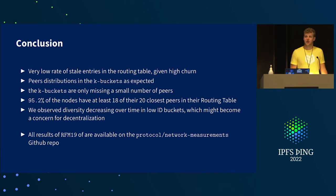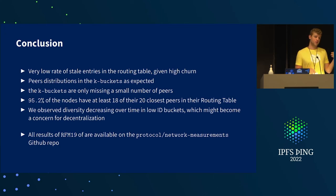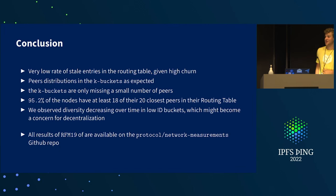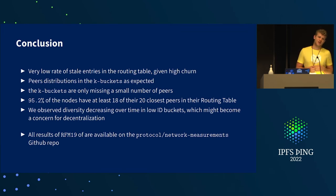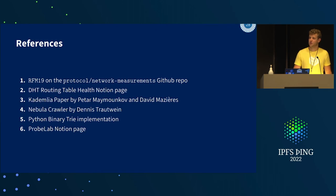To conclude: the DHT is doing very well overall. K-buckets are missing only a few peers, we don't have many stale entries, peer distribution is as expected, and most nodes know their 20 closest peers. We do observe diversity decreasing over time, but it's not an emergency — it's something we can correct. It's not critical now, but it is a path for improvement. All results are available on the network measurement repo where we publish our RFMs. I'll share the slides with clickable links.